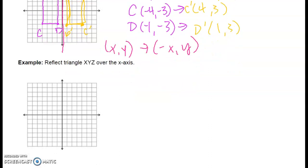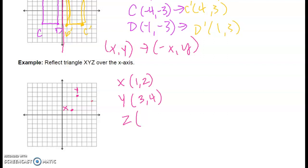Let's look at our last example. Reflect triangle XYZ over the x-axis. So let's plot X, Y, Z. X is at the ordered pair (1, 2). Y is going to be here at the ordered pair (3, 4). And Z is going to be at the ordered pair (6, 3). I want to reflect over the x-axis, which is my horizontal axis, and I want each of these points to be the same distance away from the x-axis, just on the opposite side.